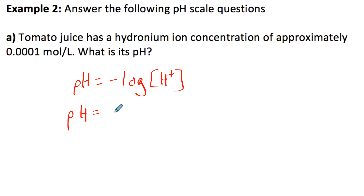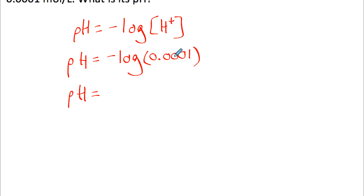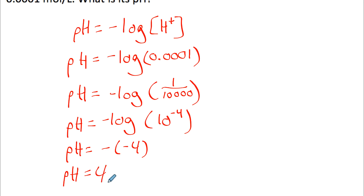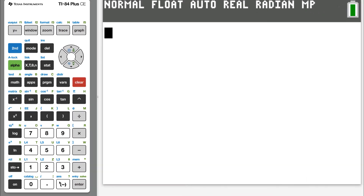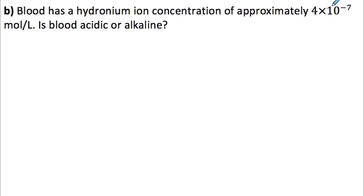Part a: tomato juice has a hydronium ion concentration of 0.0001 moles per liter. What is its pH? pH equals negative log of 0.0001. We can write 0.0001 as 10 to the negative 4, so this equals negative log of 10 to the negative 4, which equals negative times negative 4, giving pH equals 4. We could also evaluate this directly on a calculator: negative log(0.0001) equals 4.